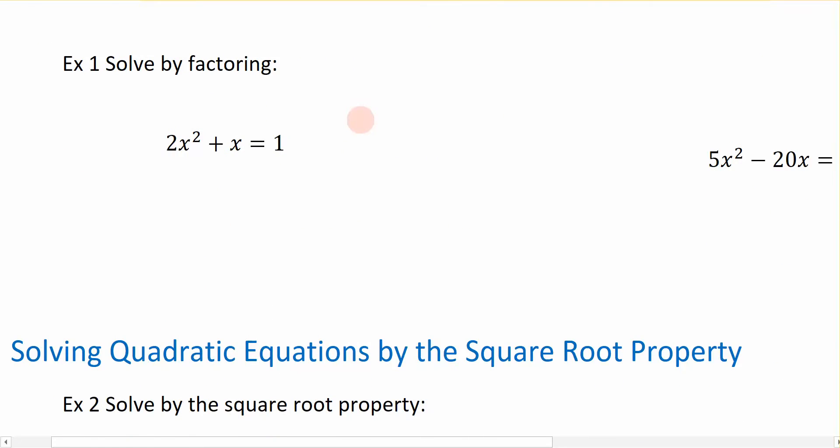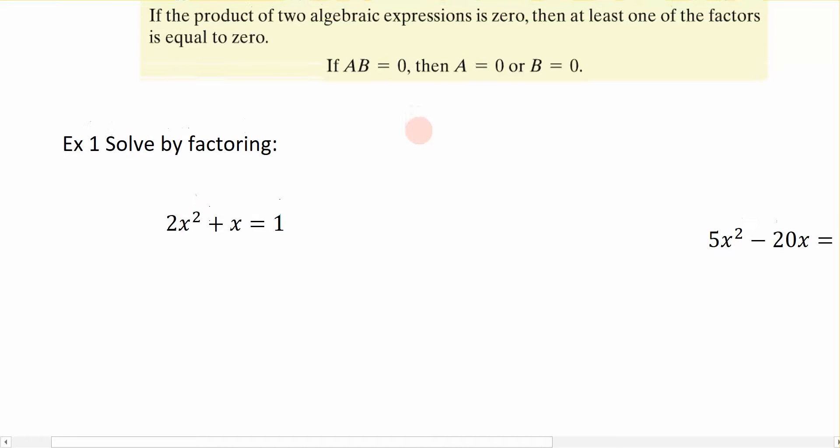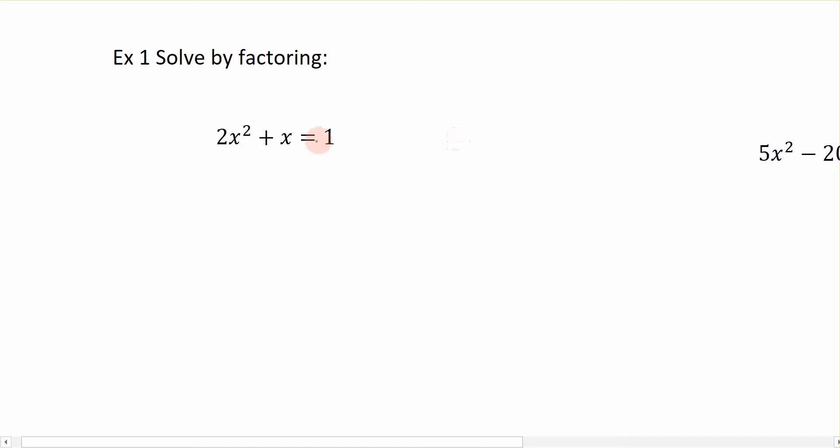The first one we're going to look at over here is 2x squared plus x is equal to one. Now when we apply this zero product principle, we have all of our terms on one side, and it's set equal to zero. So that's the format we are going to try to get this first one in. So I am going to subtract one over here to the left hand side. I end up with 2x squared plus x minus one is equal to zero.